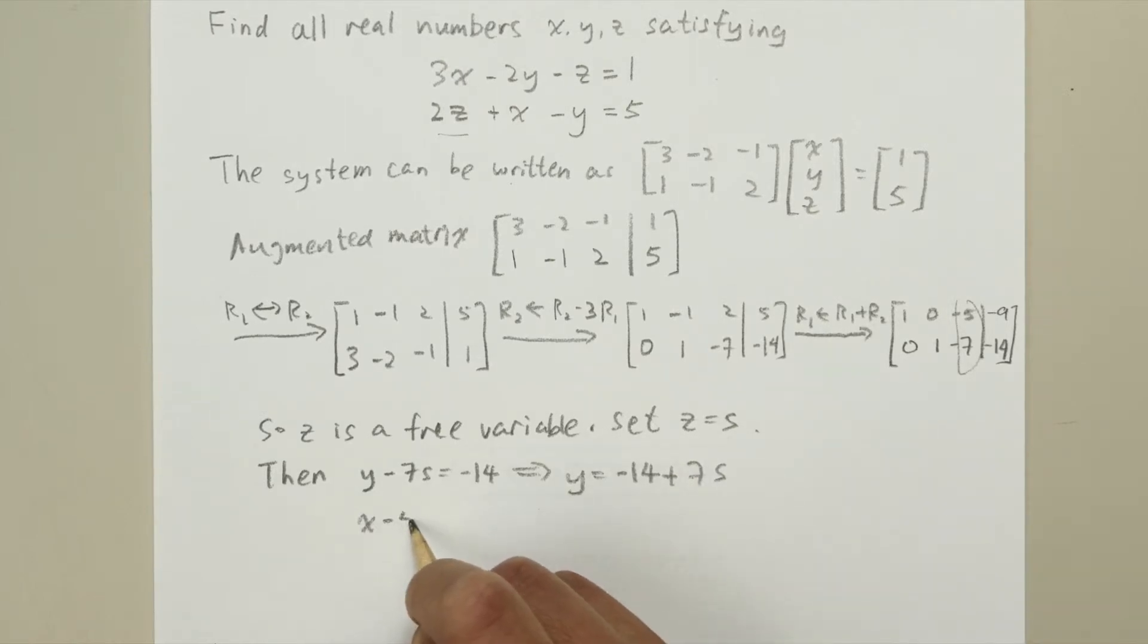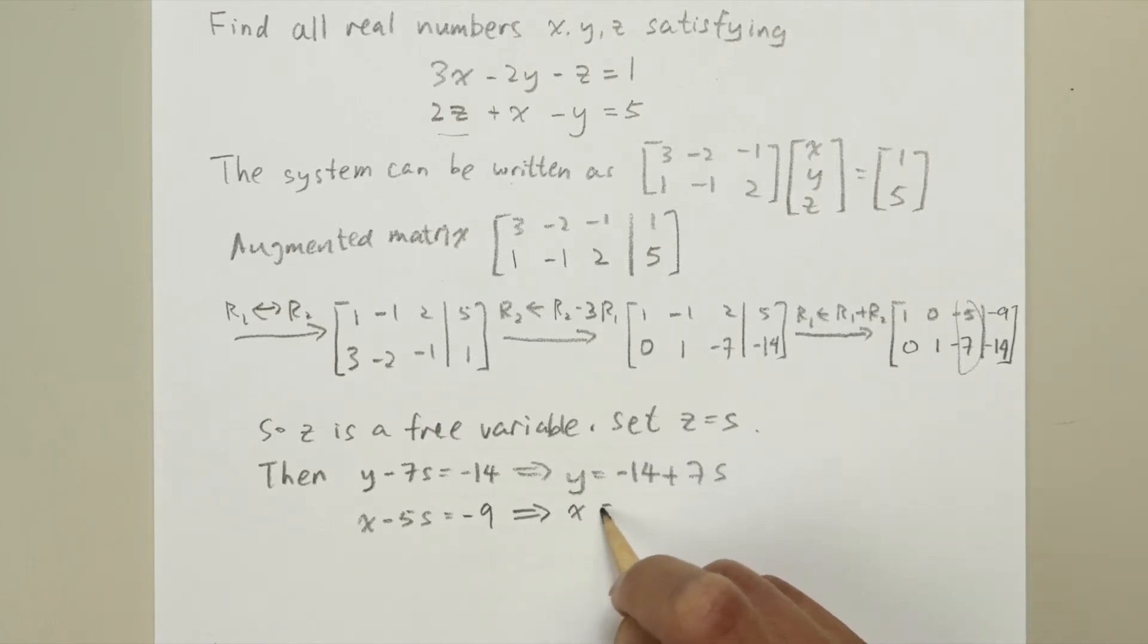And the first row tells us that x minus 5s is equal to minus 9. That gives us x equals minus 9 plus 5s.